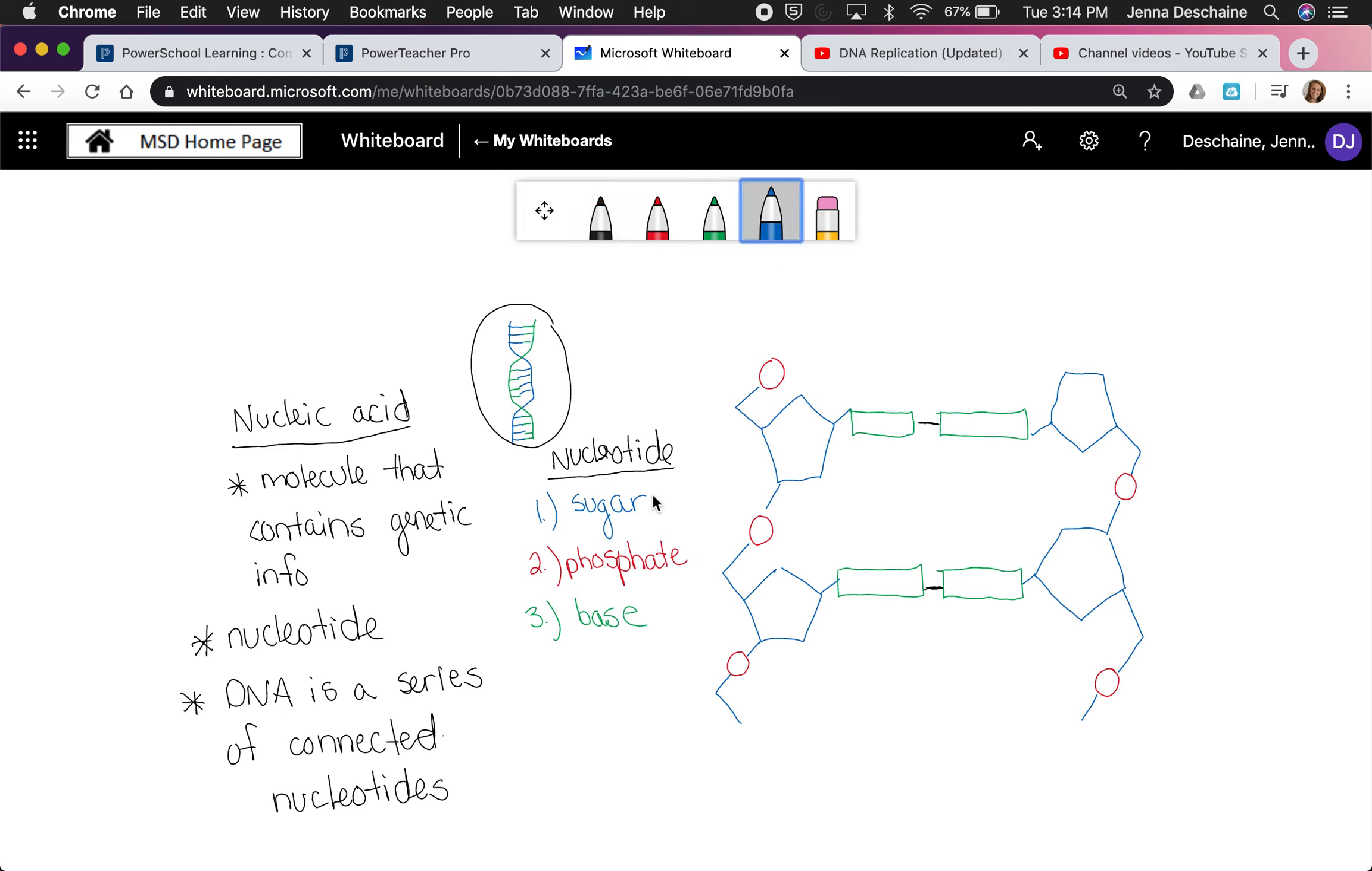So the sugar is actually this pentagon right here in blue, so I'm going to label it sugar. The phosphate is just those red circles. And a base can be found right here with the green. So these are the three basic parts of a nucleotide. I'm just going to outline a nucleotide. So this right here would be one nucleotide.